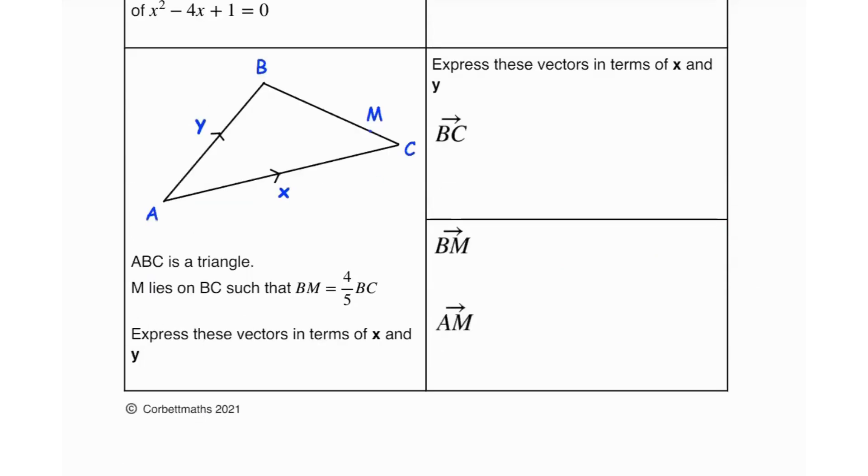Then it says ABC is a triangle. M lies on BC such that BM is 4 fifths of BC. Express these vectors in terms of x and y. So to find BC, I'm going to go from B to A then from A to C, so that's going to be BA plus AC.